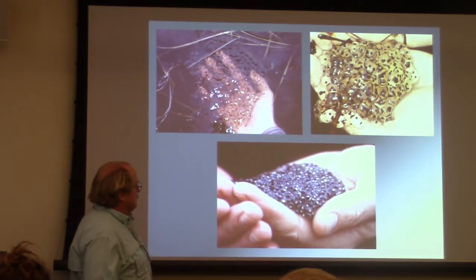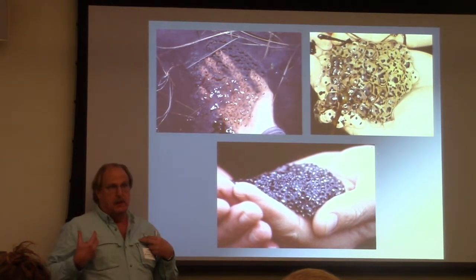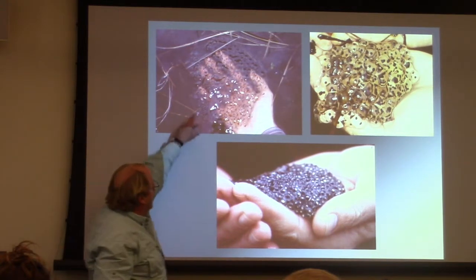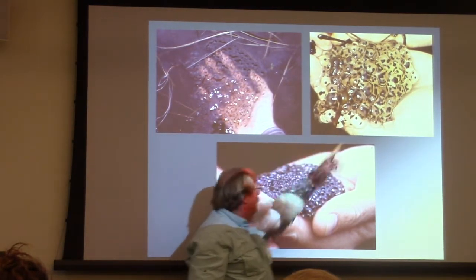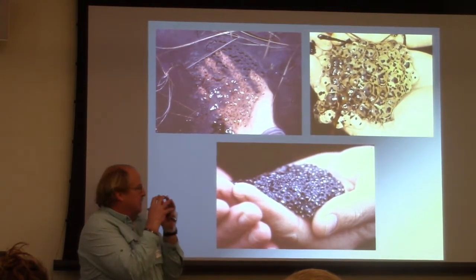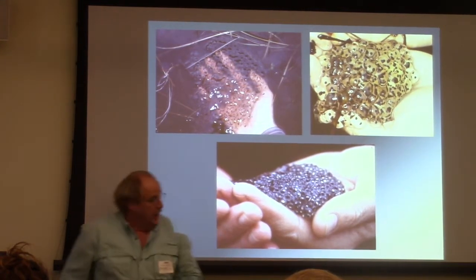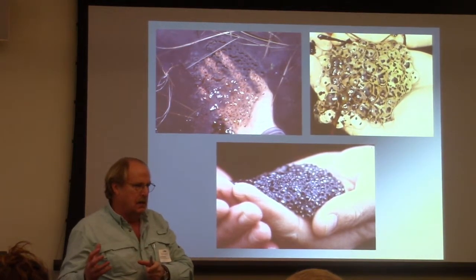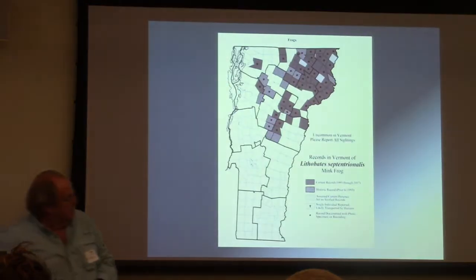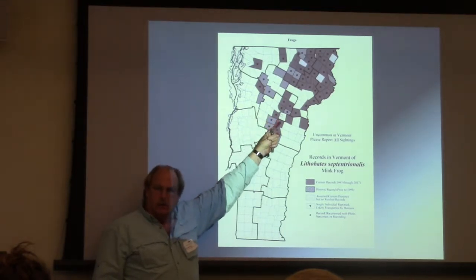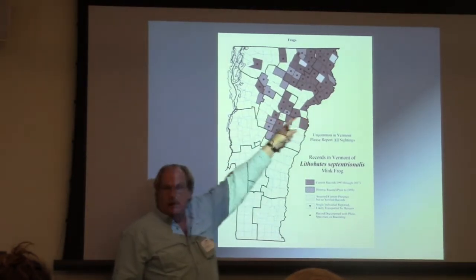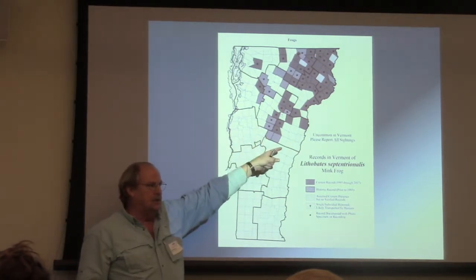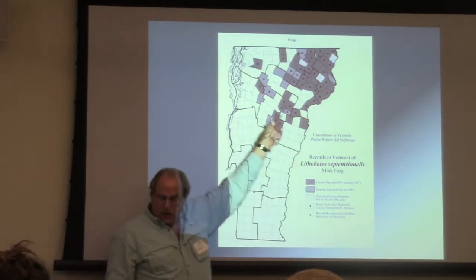Frogs that lay their eggs either earlier in the spring, in cold water, or further north or at higher elevations can afford to have rounded masses — wood frog, northern leopard frog, a mass like this. So mink frog also has a rounded mass and lays its eggs fairly late in the season. So it has to be where the water is cold. It's got to persist up in the northeast corner of Vermont because it's laying late, and that water has to stay pretty cold all year to get oxygen to the center of that mass. That's why I pick on this one.